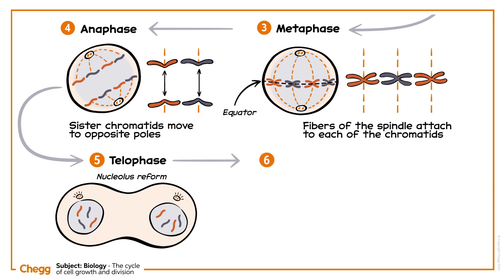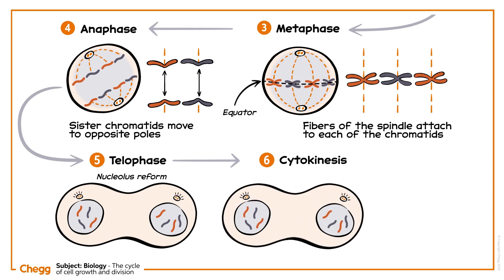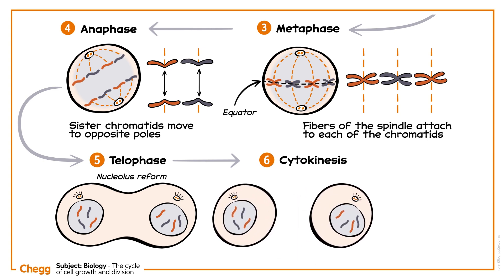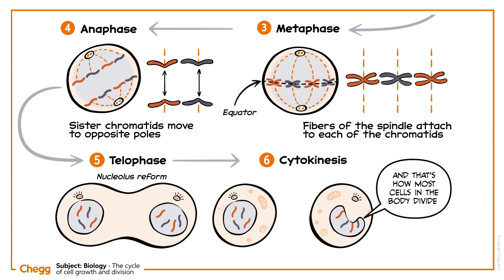The last step of the cell cycle is cytokinesis. The single cell pinches in the middle and splits in two. As the cytoplasm is divided among the two daughter cells, organelles like mitochondria and plastids are distributed. And that's how most cells in the body divide.